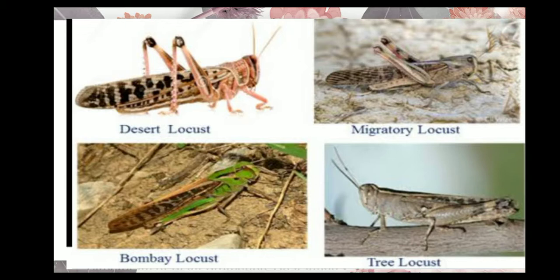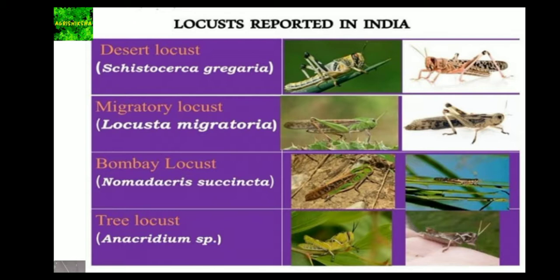Here are the four species of locusts: desert locust, migratory locusts, Bombay locusts, and tree locusts. Desert locust scientific name is Schistocerca gregaria. Migratory locust is Locusta migratoria. Bombay locust is Nomadacris succincta. Tree locust is Anacridium species.